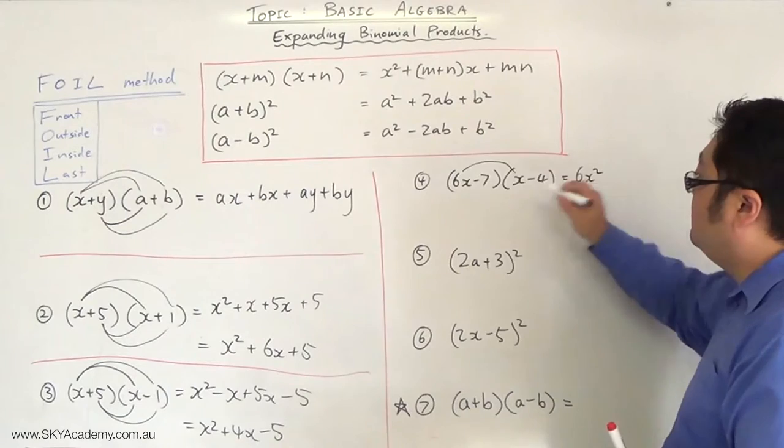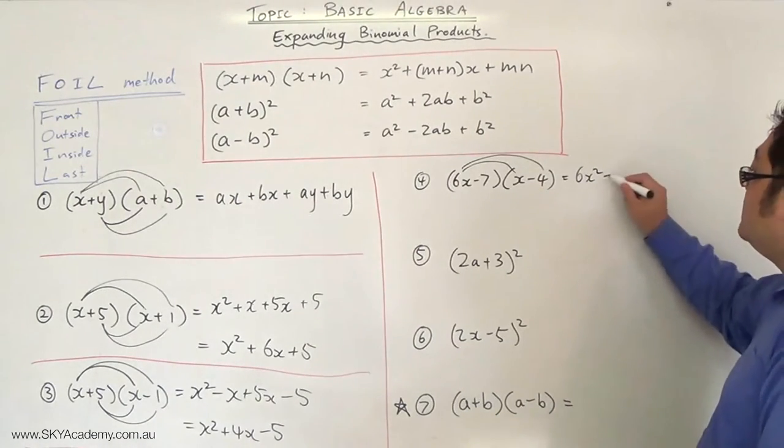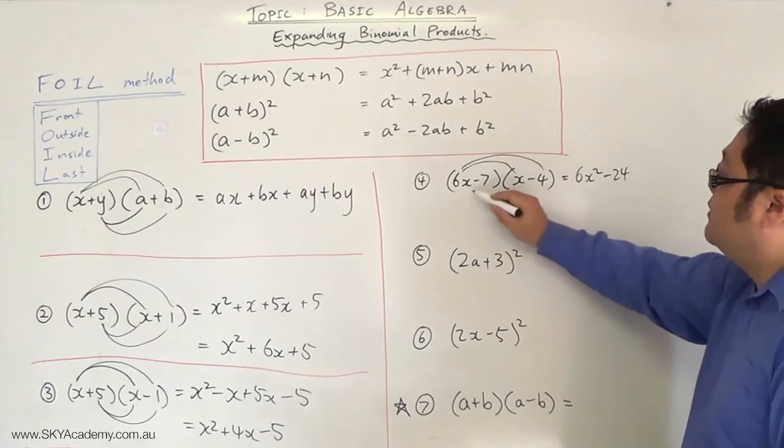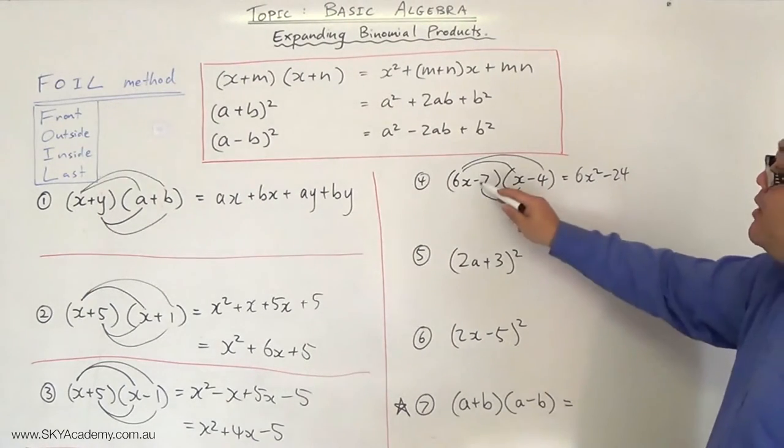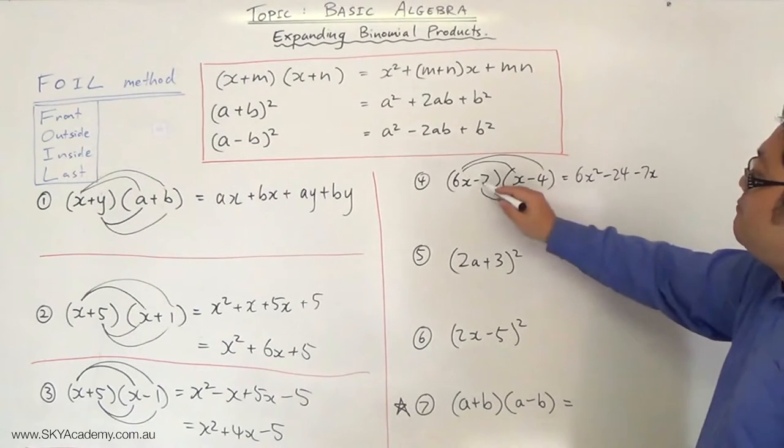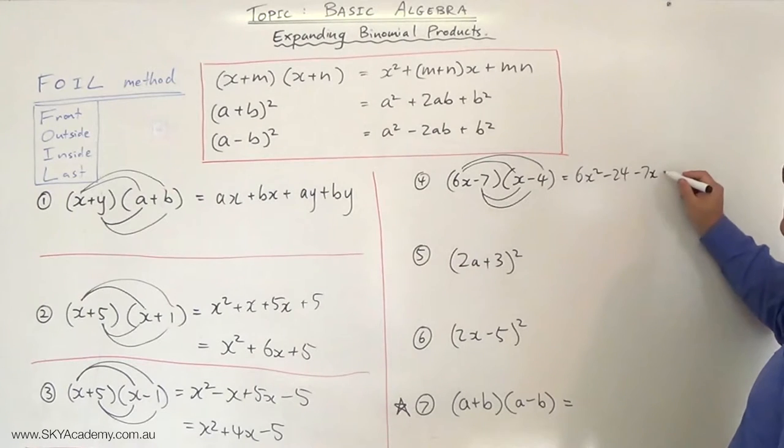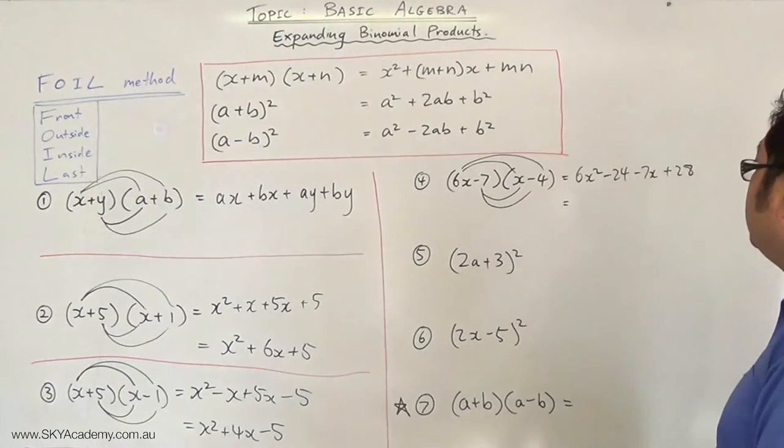So let's have a look at this. 6x times x is 6x². 6x times minus 4, which is minus 24x. Minus 7 times x is minus 7x. Minus 7 times minus 4—two negatives make a positive—is 28. Add them together.